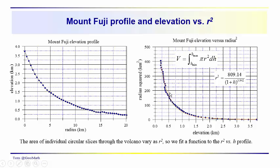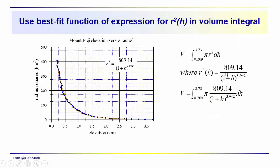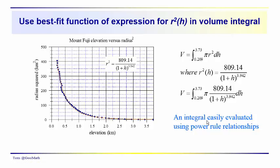So in this plot, we've plotted the radius squared versus elevation. And we've derived this function here to represent R squared as a function of H. That gives us 809.14 over 1 plus H to the 3.942 power. So we're going to be integrating this function. The coefficient of determination was about 0.991 here. So pretty good correlation.